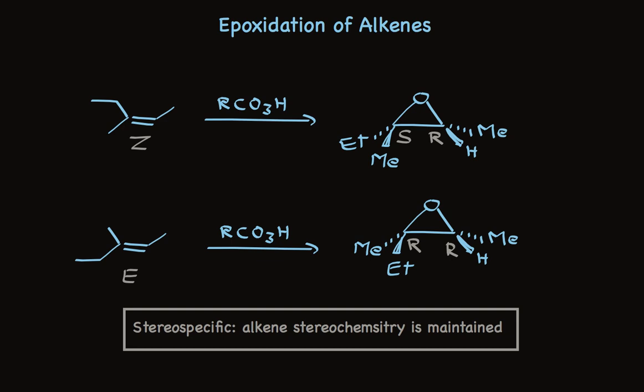Just to be complete, I should mention that in each case, I've written only one enantiomer as being formed, but the other enantiomer is formed as well. So the top reaction forms both the SR and RS pair of enantiomers, and the bottom reaction forms the RR and SS pair of enantiomers.